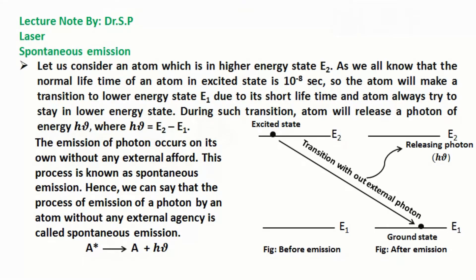During such transition, atom will release a photon of energy hν where hν = E₂ - E₁. The emission of photon occurs on its own without any external afford. This process is known as spontaneous emission. Hence we can say that the process of emission of a photon by an atom without any external agency is called spontaneous emission.